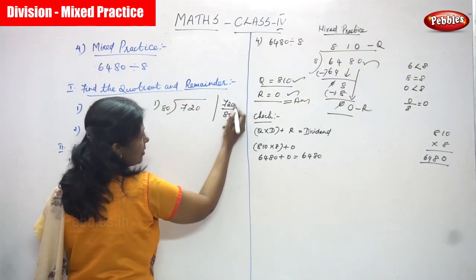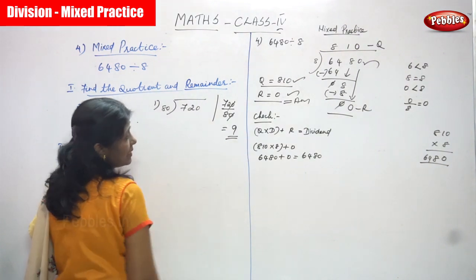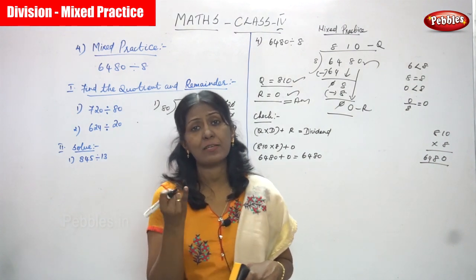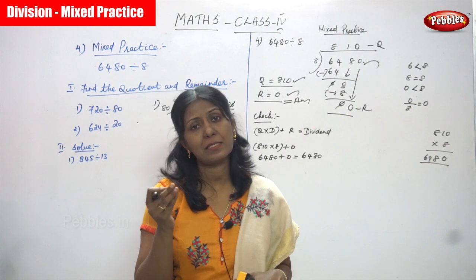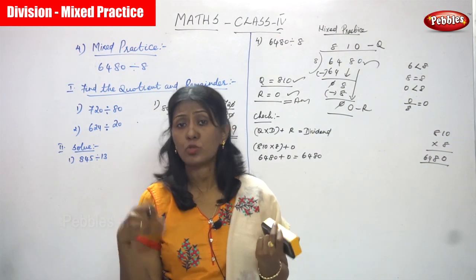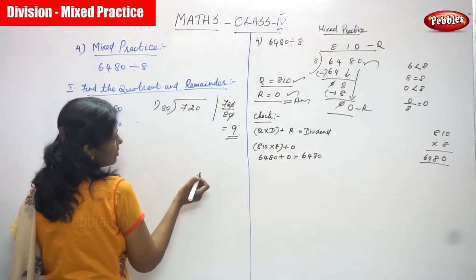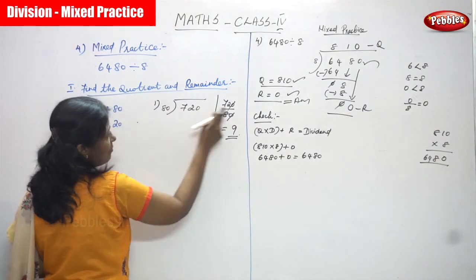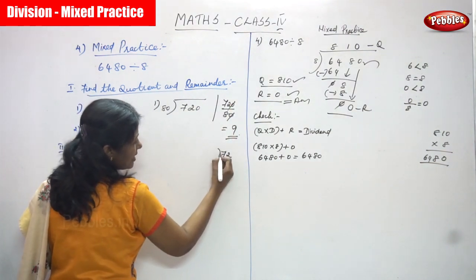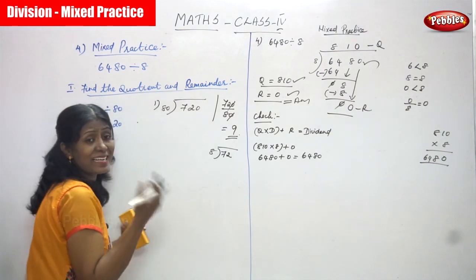You can do this shortcut: cancel the zero from 720 and the zero from 80, so 72 divided by 8. You must say the eight times table. 8 ones are 8, 8 twos are 16, 8 threes are 24, 8 fours are 32, 8 fives are 40, 8 sixes are 48, 8 sevens are 56, 8 eights are 64, 8 nines are 72. So the answer is 9.